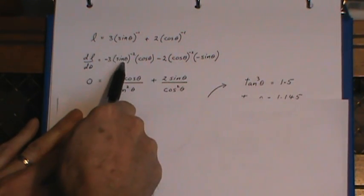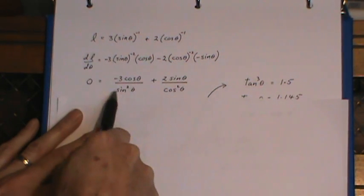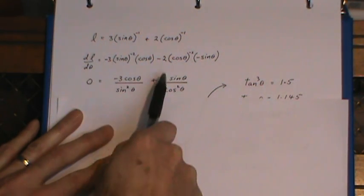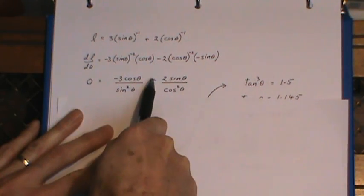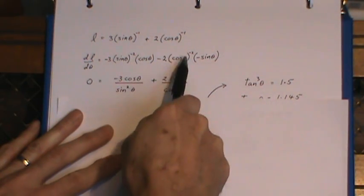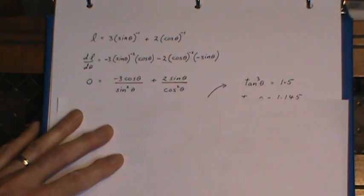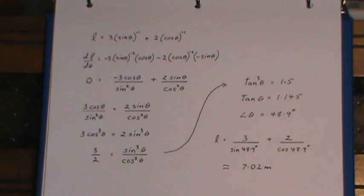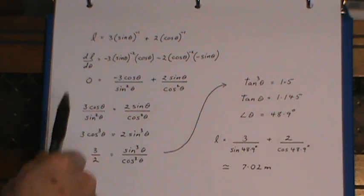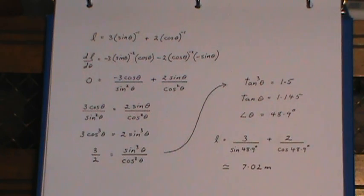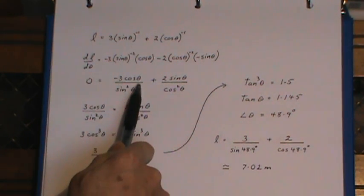And I cleaned that up a little bit. I wrote the sine to the negative 2 on the bottom as sine squared. I had a couple of negatives here so I put plus, and again moved the cos to the bottom. And the rest of this is just a matter of cleaning this up. I put the derivative equal to 0, moved this term to the left side.